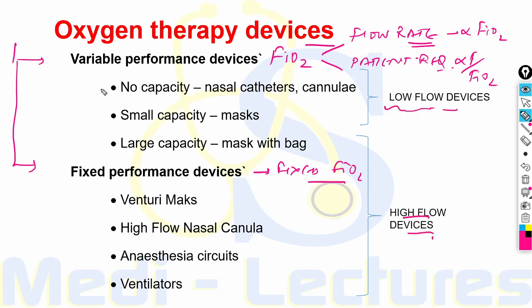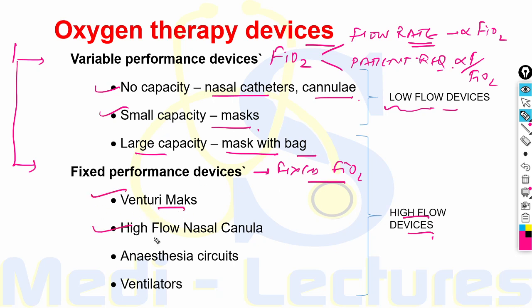All these devices are differentiated into low flow devices and high flow devices. Low flow devices include those without any reservoir capacity like nasal catheters and cannula, and small capacity devices like face masks. High flow devices include large capacity masks with a bag (NRBM), venturi mask, high flow nasal cannula, anesthesia circuits, and ventilators.